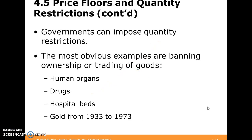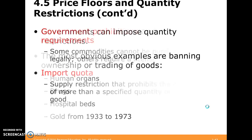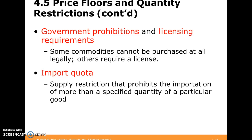Another thing that can lead us to disequilibrium is quantity restrictions. Governments can impose quantity restrictions — they don't particularly like it if you trade organs, drugs, or hospital beds. There can be outright prohibitions, like prohibition of alcohol or marijuana, where the government doesn't want quantities to be traded. They may impose licensing requirements before quantities can be purchased — think of a gun. Or you can't import more than a specified amount of some good from a country.